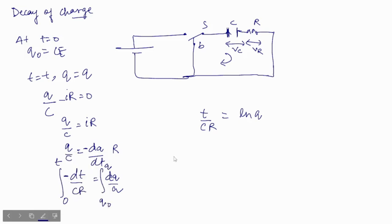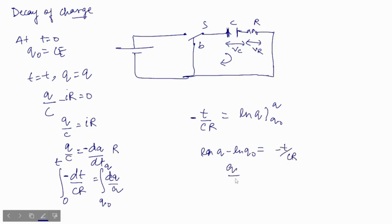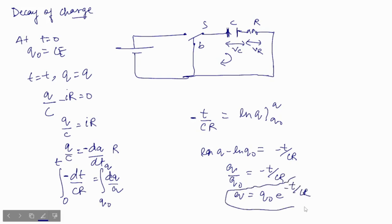Integrating: ln(Q) − ln(Q naught) = −t / CR, which gives ln(Q / Q naught) = −t / CR. Therefore Q = Q naught × e^(−t/CR). This is our expression for the instantaneous charge on the capacitor during discharging.